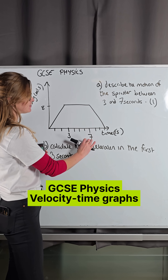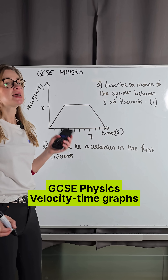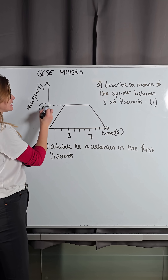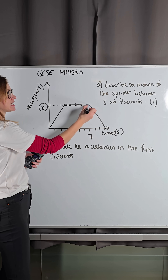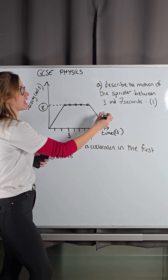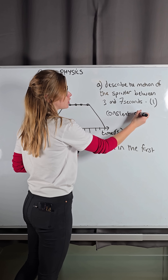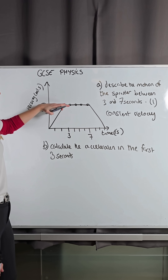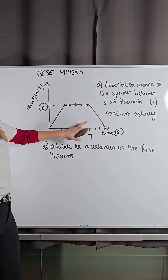So here's my 3 seconds, here's my 7 seconds. We can see it's a flat line. It's a velocity-time graph, so I can see the velocity here is 8. It stays at 8 the whole time. So velocity always stays at 8 — that means it's traveling at a constant speed, or constant velocity, of 8 meters per second. It's not changing; it's always staying at that number.